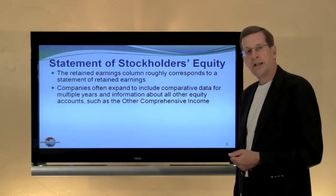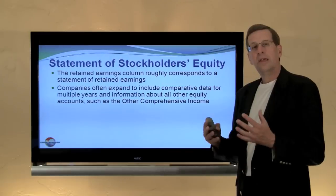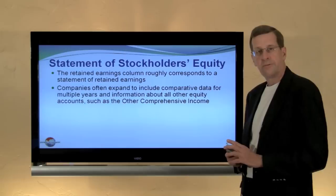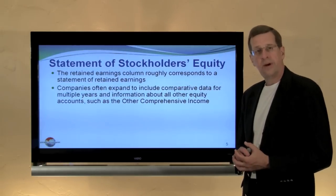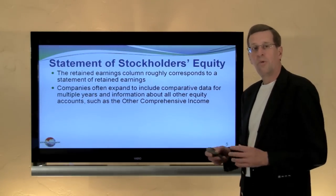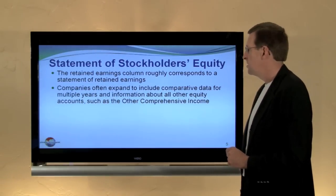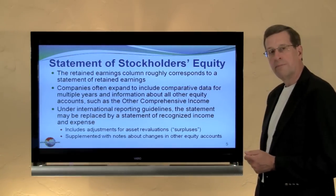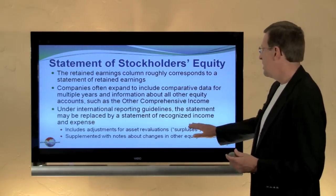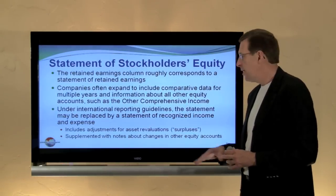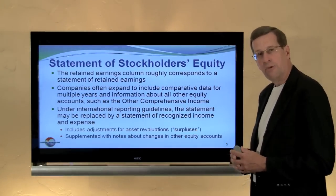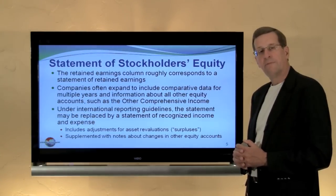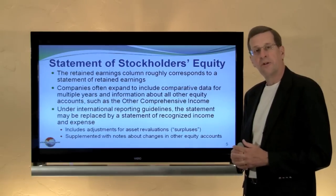Some accounts were not included in this example. Accumulated Other Comprehensive Income might be another column you could find in the Statement of Stockholders' Equity. If there was preferred stock, you might have a column for preferred stock. So there's actually quite a bit of content that could appear in a Statement of Stockholders' Equity. Under international accounting standards, the Statement of Stockholders' Equity may be replaced by a broader statement of recognized income and expense, which would include adjustments for such things as asset re-evaluations that are acceptable in some parts of the world. Typically, it is supplemented with notes about information or changes in other equity accounts.